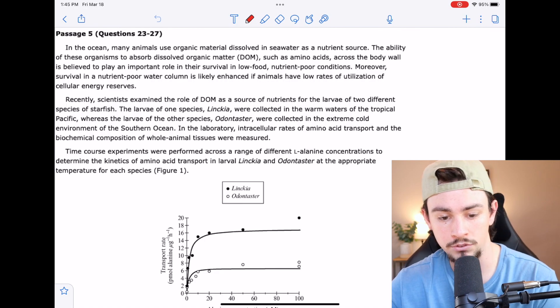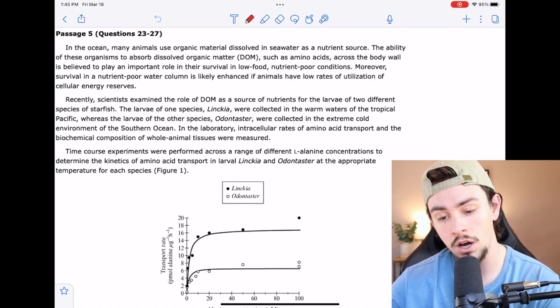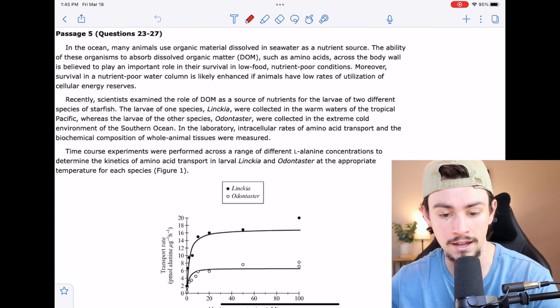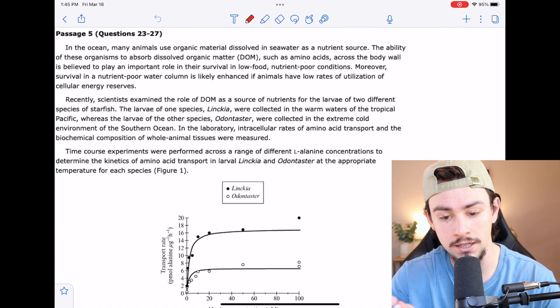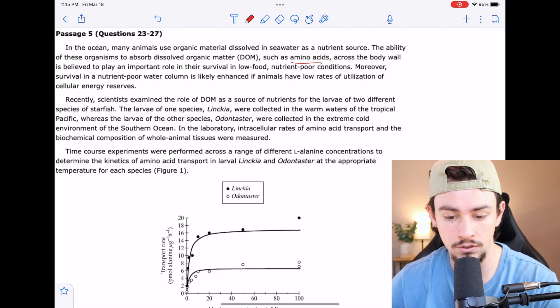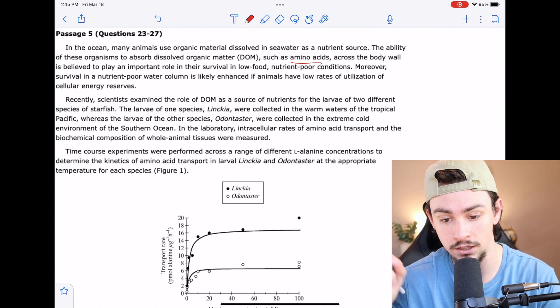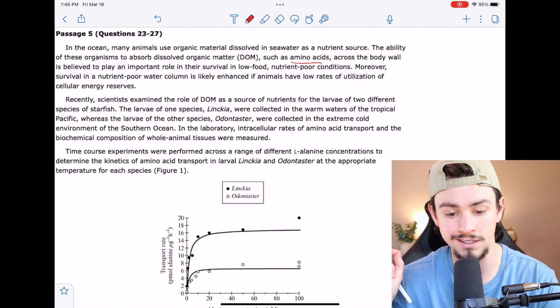In the ocean, many animals use organic material dissolved in seawater as a nutrient source. The ability of these organisms to absorb dissolved organic matter or DOM, such as amino acids—that's a basic science right, amino acids—across the body wall is believed to play an important role in their survival in low food, nutrient-poor conditions.